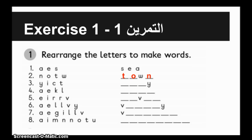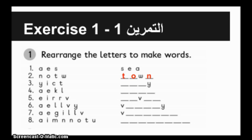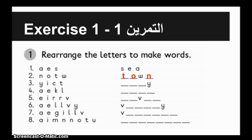Rearranging the letters to make words. Town: Y-I-C-T — city. A-E-K-L — lake. E-I-R-R-V — river.